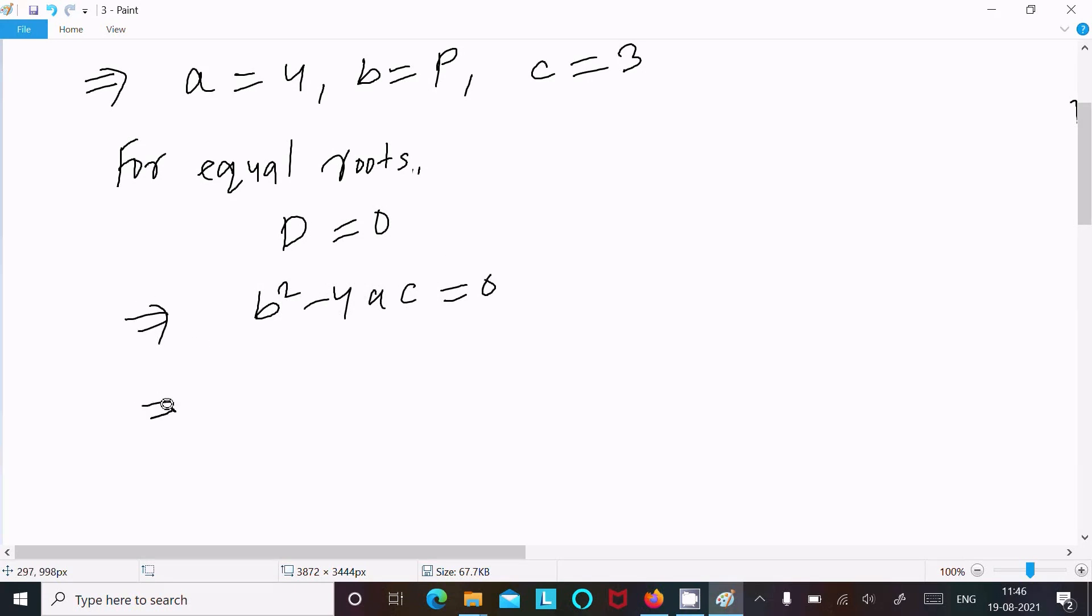Now putting the values of a, b, and c: p² - 4 × 4 × 3 = 0.